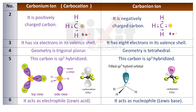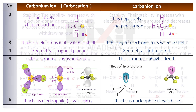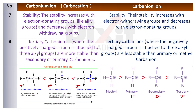Point number 6: A carbonium ion acts as an electrophile, that is, a Lewis acid. Point number 7: The stability of a carbonium ion increases with electron-donating alkyl groups and decreases with electron-withdrawing groups attached to the positively charged carbon atom.